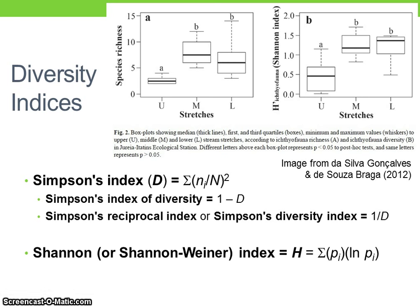Another index used to quantify community diversity is the Shannon or Shannon-Wiener index, which is represented as capital H in equations. The equation for the Shannon index is the sum of the relative abundance of each species — that is, lowercase p for species i equals lowercase n for species i divided by uppercase N (ni divided by N) — times the natural log of the relative abundance, across all species in the community. In the absence of diversity, where only one species is present, the Shannon index equals 0. The maximum Shannon index occurs when all species are present in equal numbers.